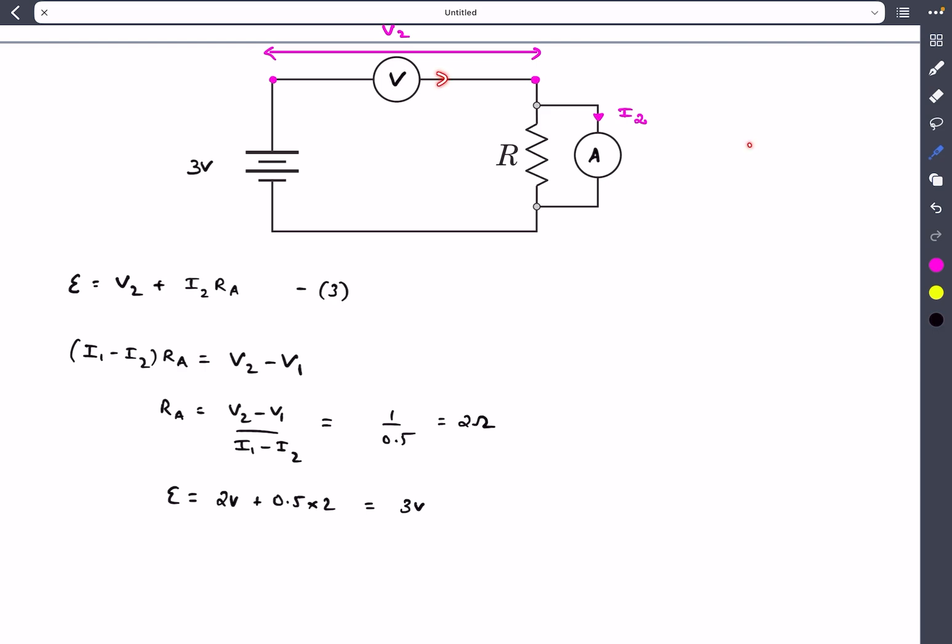The current through the voltmeter is the voltage divided by the resistance, so that will be V₂/Rᵥ. This will be split into I₂ and the current through the resistance. This equals I₂ plus the voltage across these two branches, which is I₂Rₐ, divided by the resistance of the resistor.